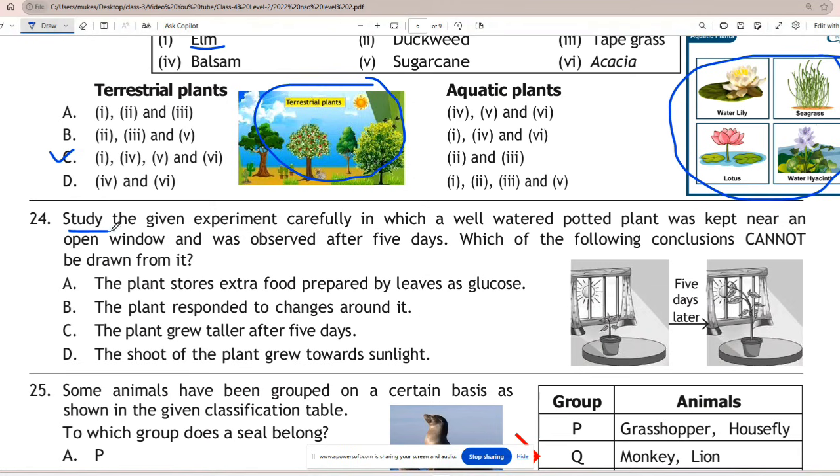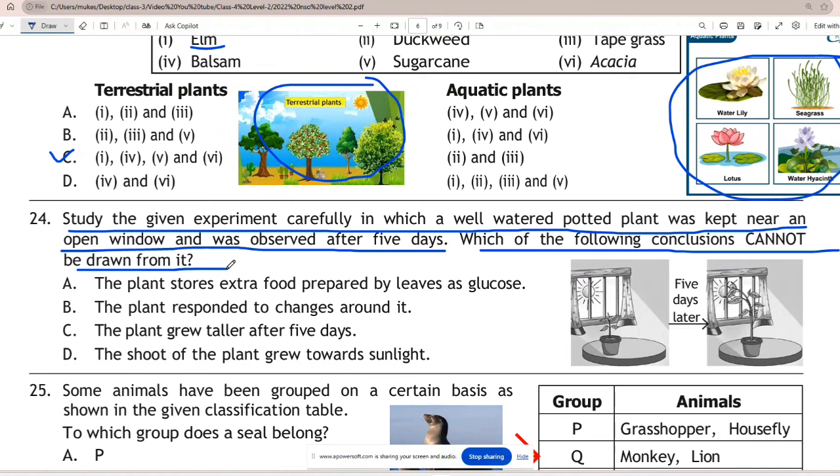Question 24: Study the given experiment carefully in which a well-watered potted plant was kept near an open window and was observed after 5 days. Which of the following conclusions cannot be drawn from it? The answer is option A - the plant stores extra food prepared by leaves as glucose is incorrect. During photosynthesis plants produce glucose from water, carbon dioxide, and chlorophyll. The plant uses some of the glucose and stores the rest as starch in its leaves. Rest other options are correct.